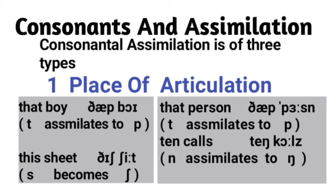Consider these examples for your understanding. 'That boy' — it will become 'thap boy.' The T sound assimilates to the P sound. Same is the case with 'that person' — it becomes 'thap person.' Again, T assimilates to P sound in terms of place of articulation.